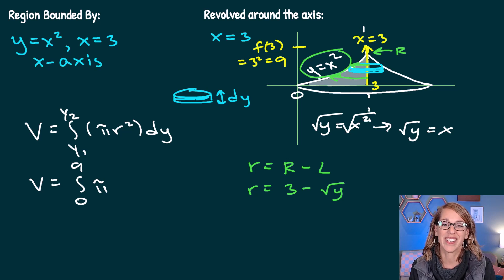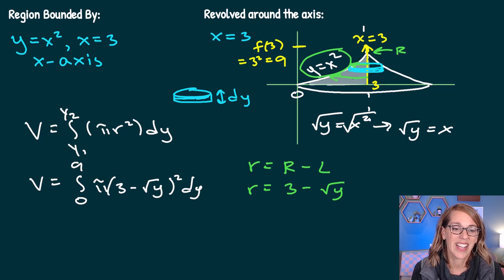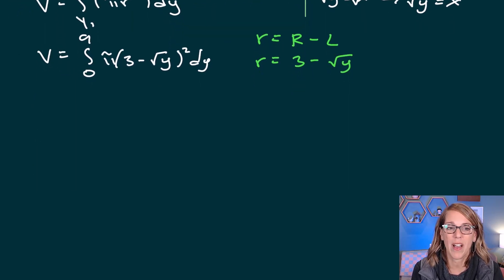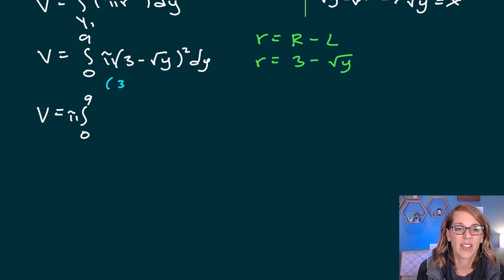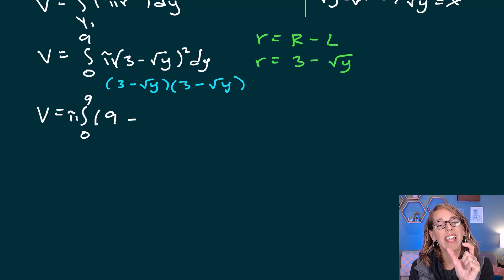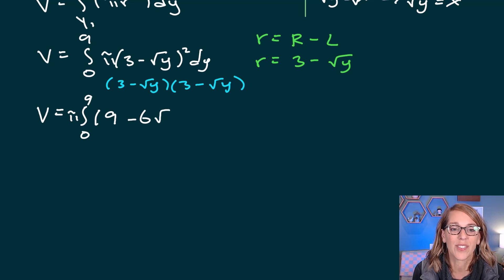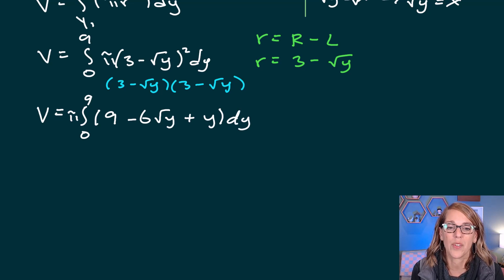Putting that into the volume integral, I have pi times the integral from zero to nine of (3 minus the square root of y) squared dy. I'll bring pi out in front and FOIL what's inside the parentheses: (3 minus radical y)(3 minus radical y). That gives 9 minus 6 radical y plus y. So the integral becomes pi times the integral from zero to nine of (9 minus 6 radical y plus y) dy.